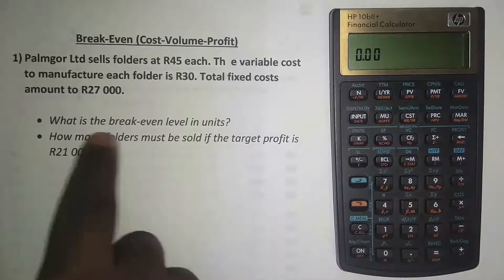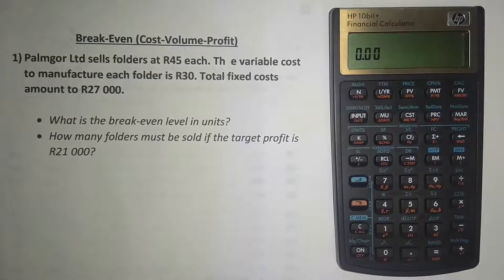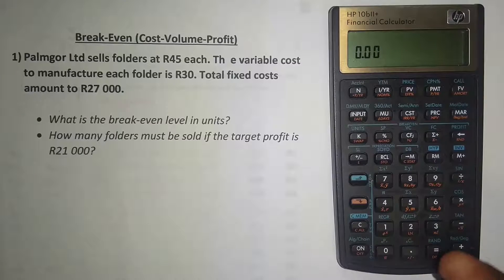The second question says: how many folders must be sold if the target profit is 21,000 Rand? Let's look at the first one — what is the break-even level in units? It's very simple to do with a calculator.